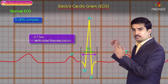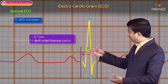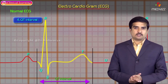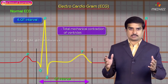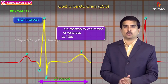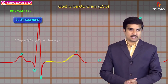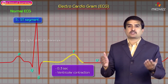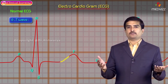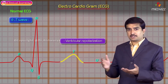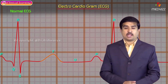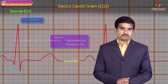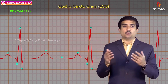After the QRS complex, the QT interval represents the total mechanical contraction of ventricles, with a duration of 0.4 seconds. The ST segment refers to ventricular contraction. The T wave represents ventricular repolarization, driven mainly by potassium. The U wave, seen last, is mainly associated with hypokalemia and bradycardia.